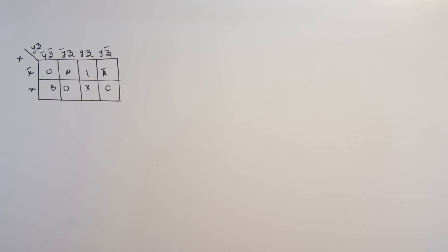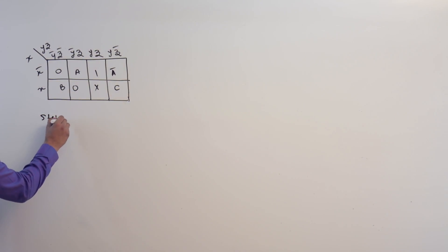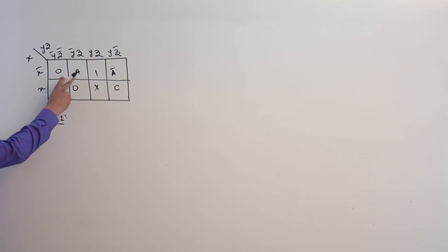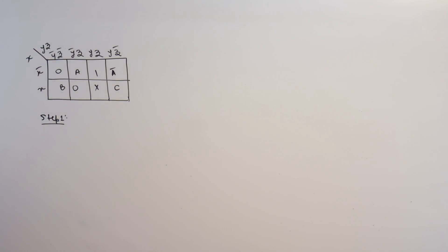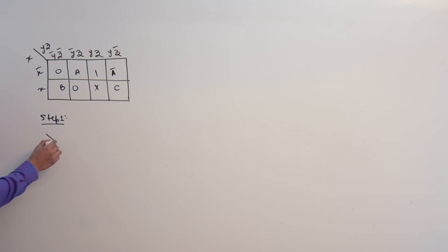Let us take the first step. Step one is: take all the variables in the map and put zero in those locations and get a value which is one.